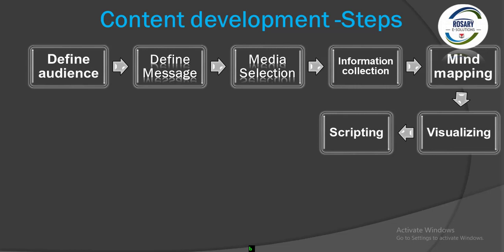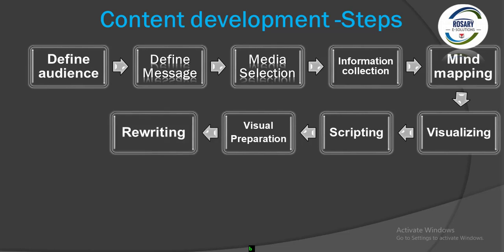Once you have the textbook, you can refer to it. We can do visuals in the script — we can show text, show pictures, and show animation. Then we can do and shoot the visuals.